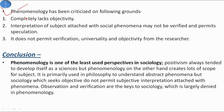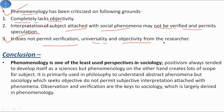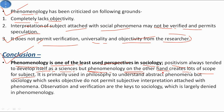Phenomenology has been criticized for completely lacking objectivity. Interpretation of subjects attached with social phenomena may not be verified and permits speculation. It does not permit verification, universality, or objectivity from the researcher. Phenomenology is one of the least used perspectives in sociology. While positivism tends to develop itself as a science, phenomenology creates lots of scope for subjectivity. Observation and verification, which are key to sociology, are largely denied in phenomenology.